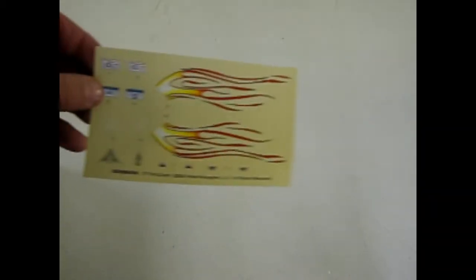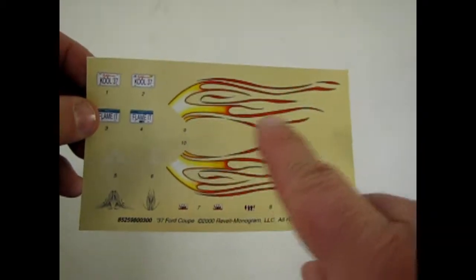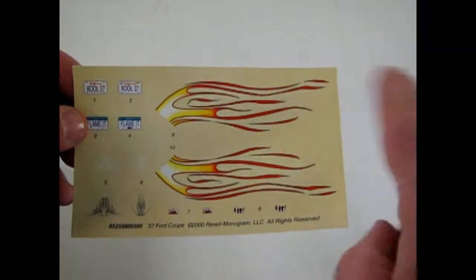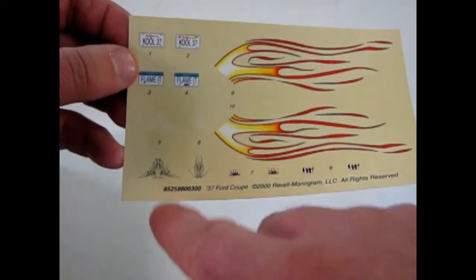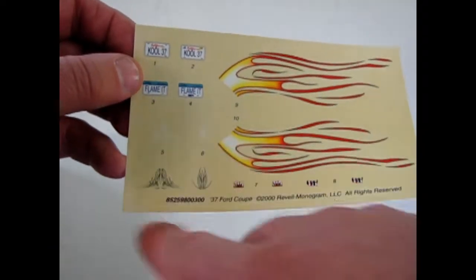Now let's look at our decal sheet. And here it is with these really cool flames that sort of drip off the ends. Two license plates and our pin striping sitting right there.